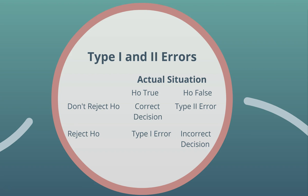The error table has two dimensions: the actual situation and our decision based on testing. The actual situation indicates whether H₀ is true or false, and our decision is whether we reject or do not reject H₀. When you do not reject the null hypothesis when it is actually true, you are making a correct decision. But if you do not reject the null hypothesis when it is actually false, you are making a Type 2 error.